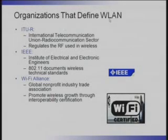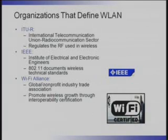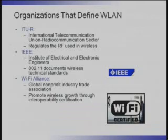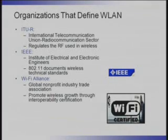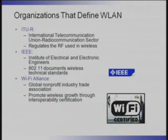Organizations that define wireless LANs include the IEEE, which defines our data link and physical layers, and the Wi-Fi Alliance, a non-profit based in San Jose. If you make an 802.11 IEEE specification product, you pay the Wi-Fi Alliance $20,000 and they test your product to verify it meets IEEE regulations. If it passes, they stamp it 'Wi-Fi Certified.' You should see this stamp on the bottom of your wireless cards or access points.